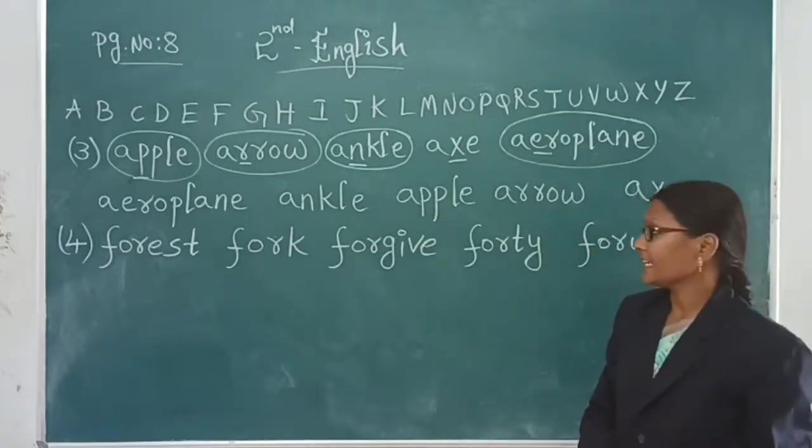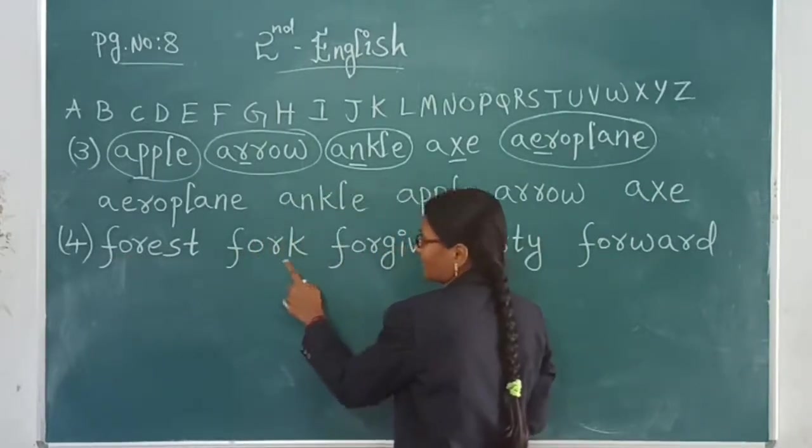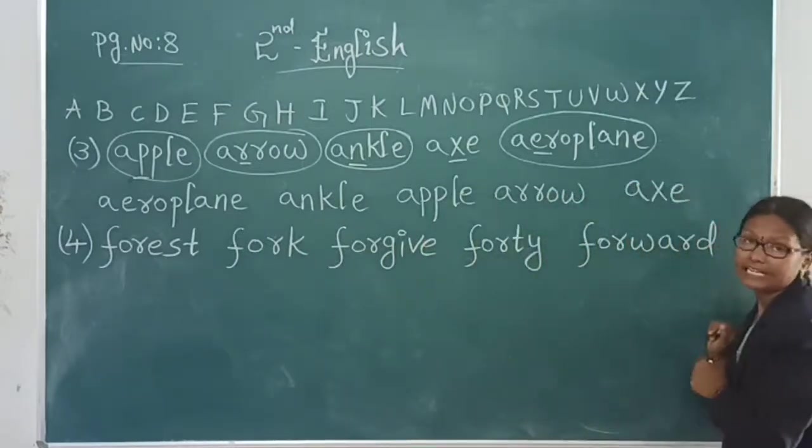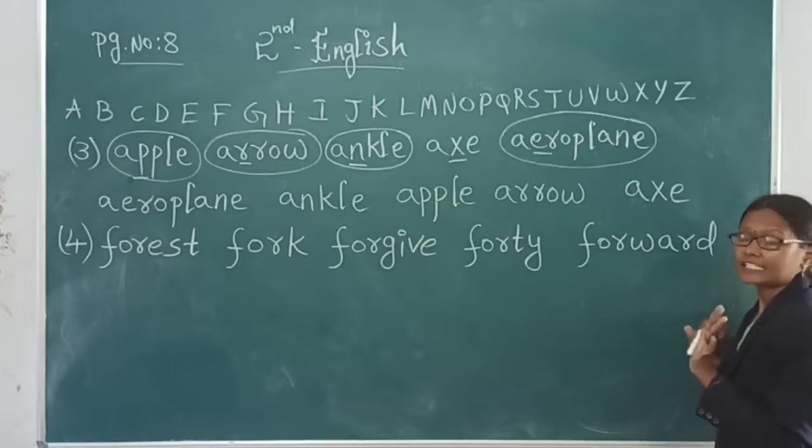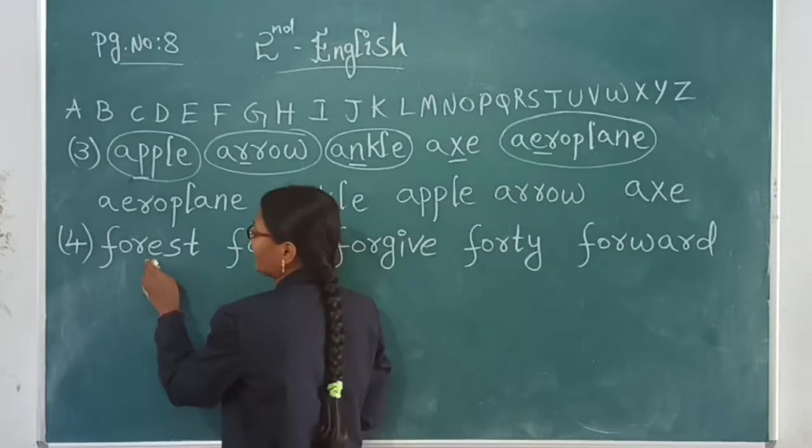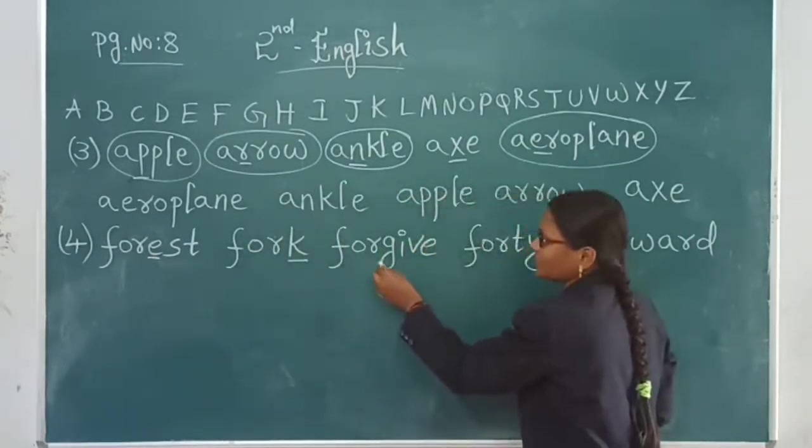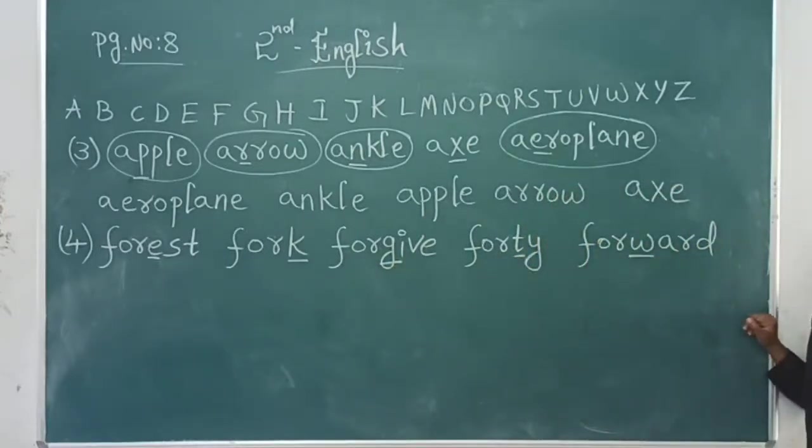Here if you see, first F-O-R, F-O-R, F-O-R, F-O-R, all are same. First three words are, all words are, first three letters are same. So leave that first three. Now if you see the fourth one, here E, K, G, T, W. These are the letters.